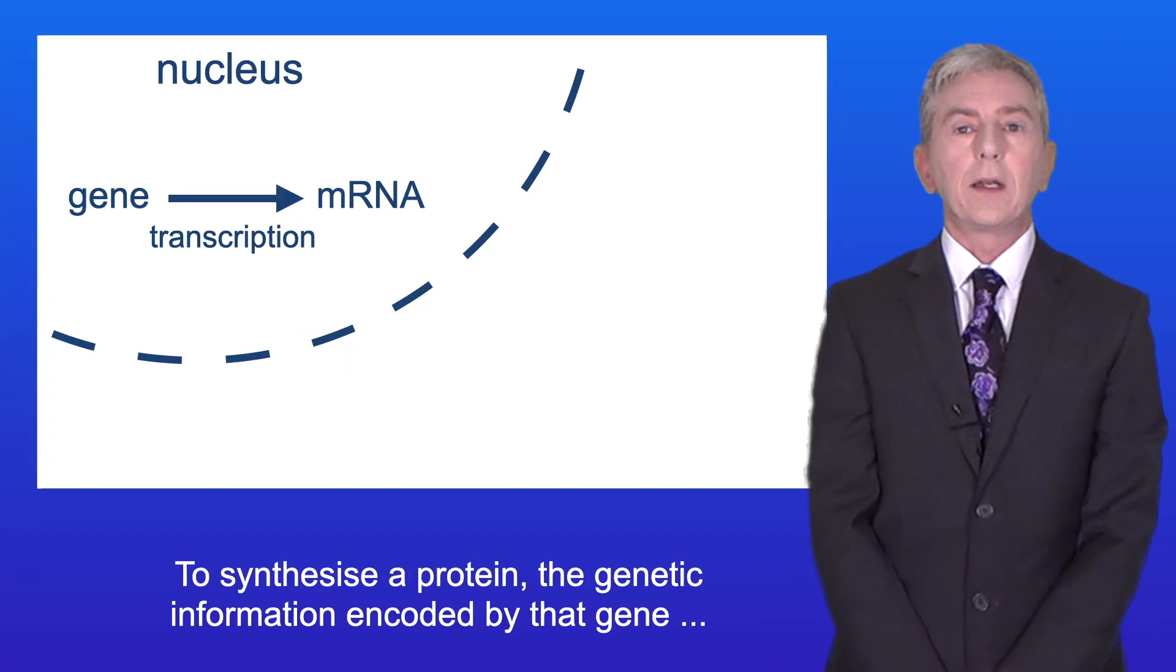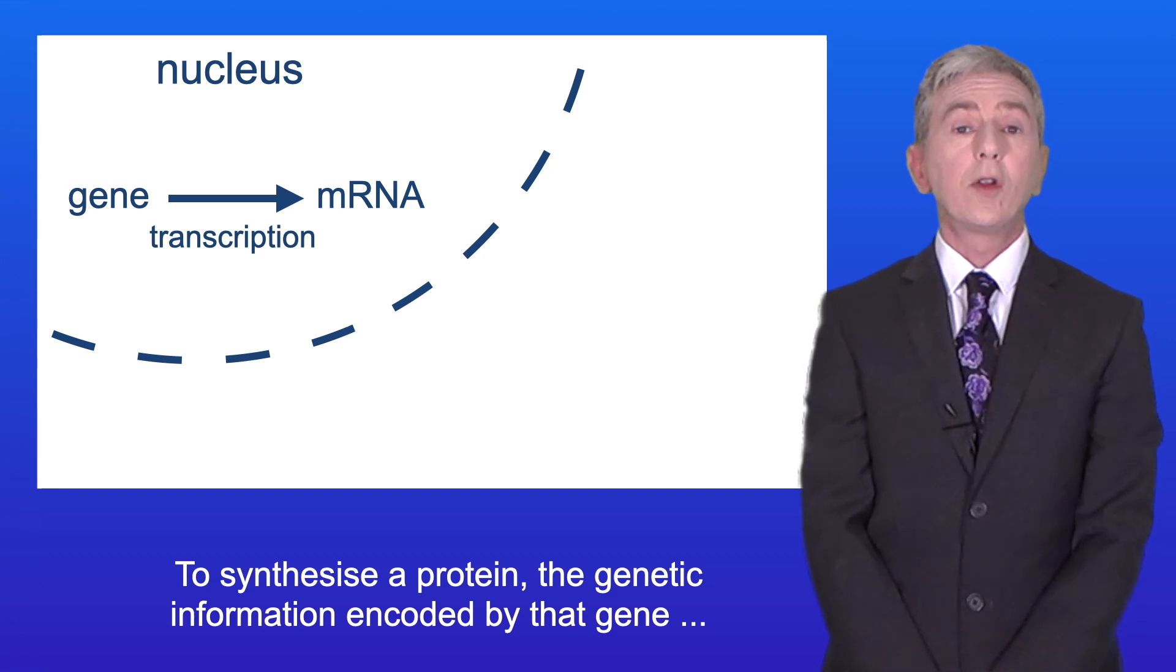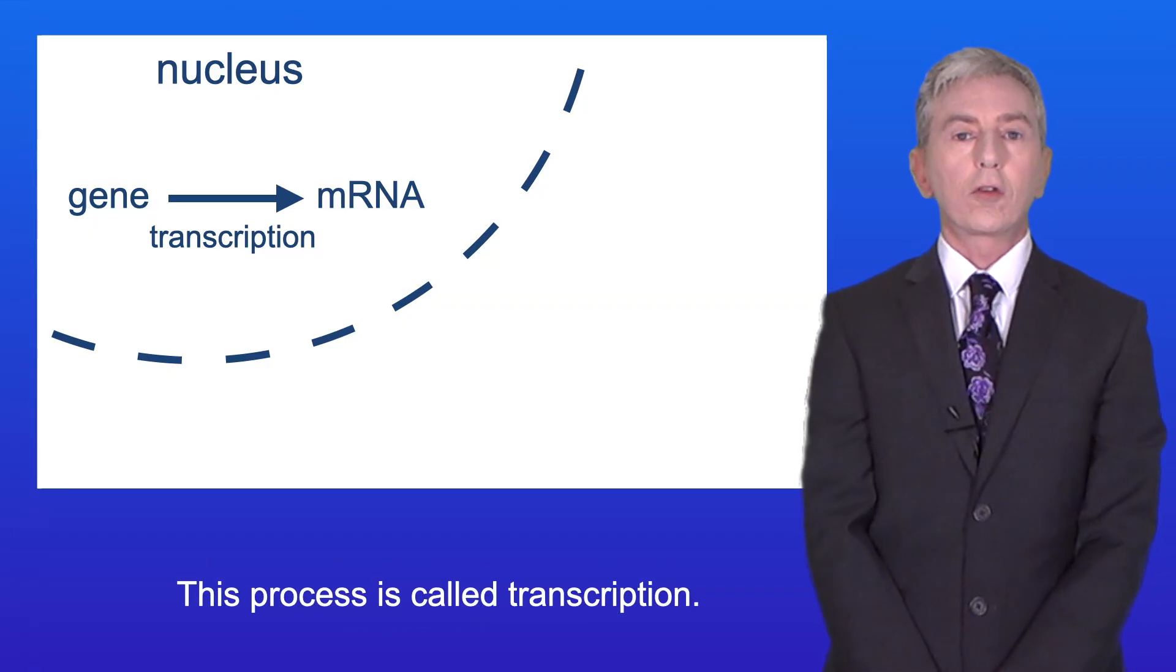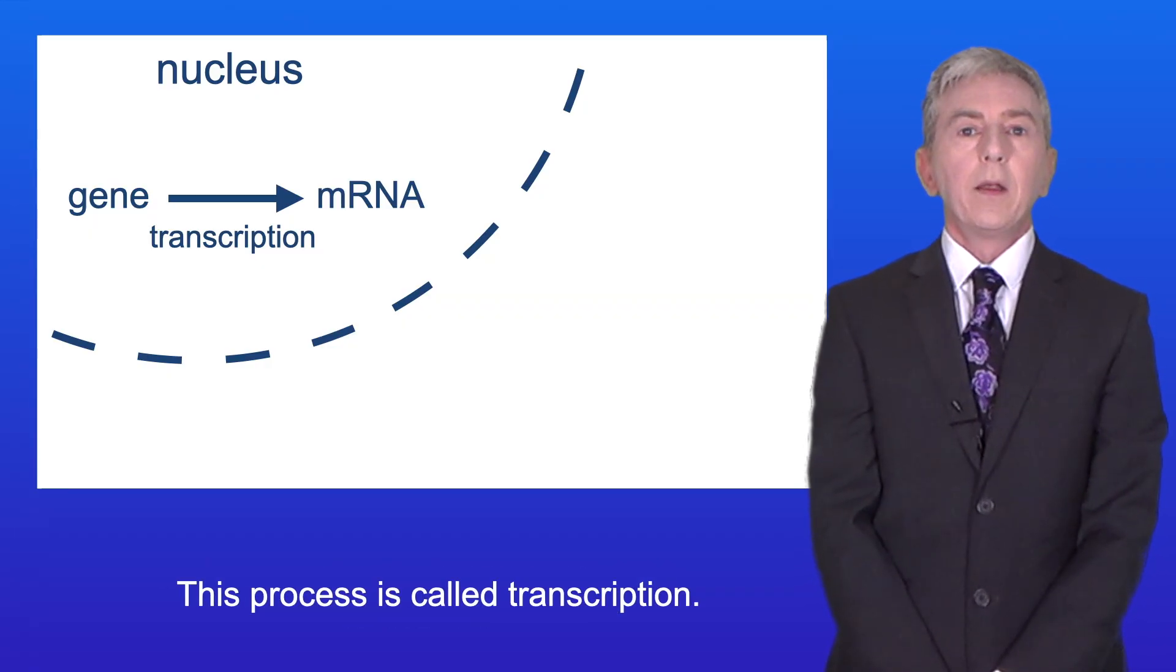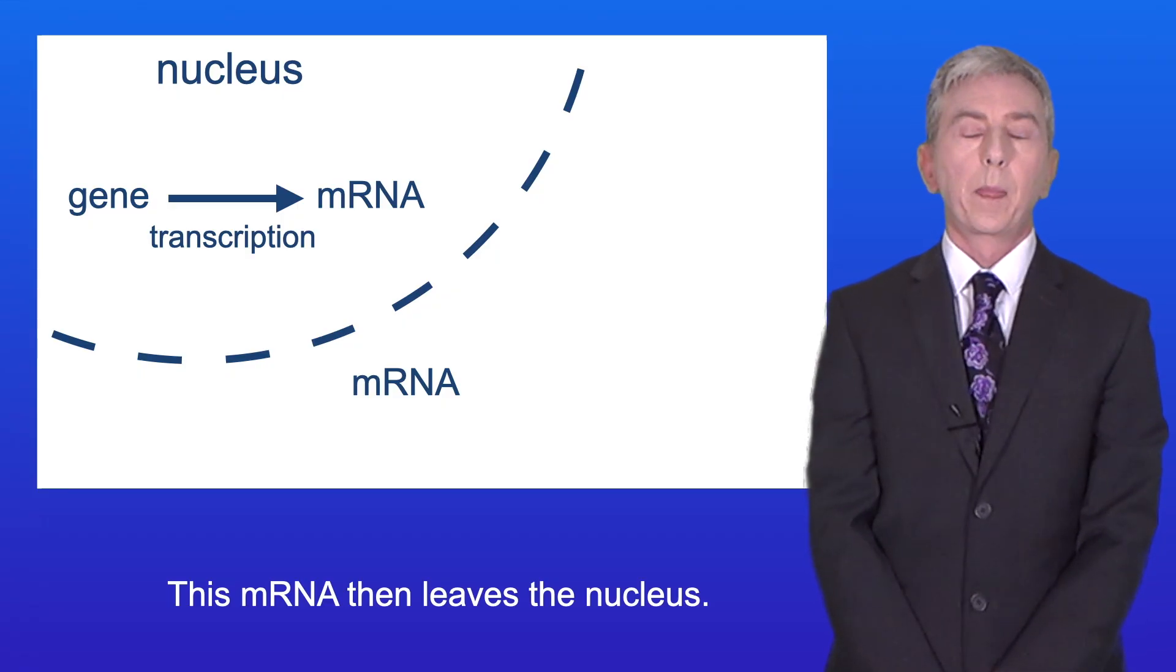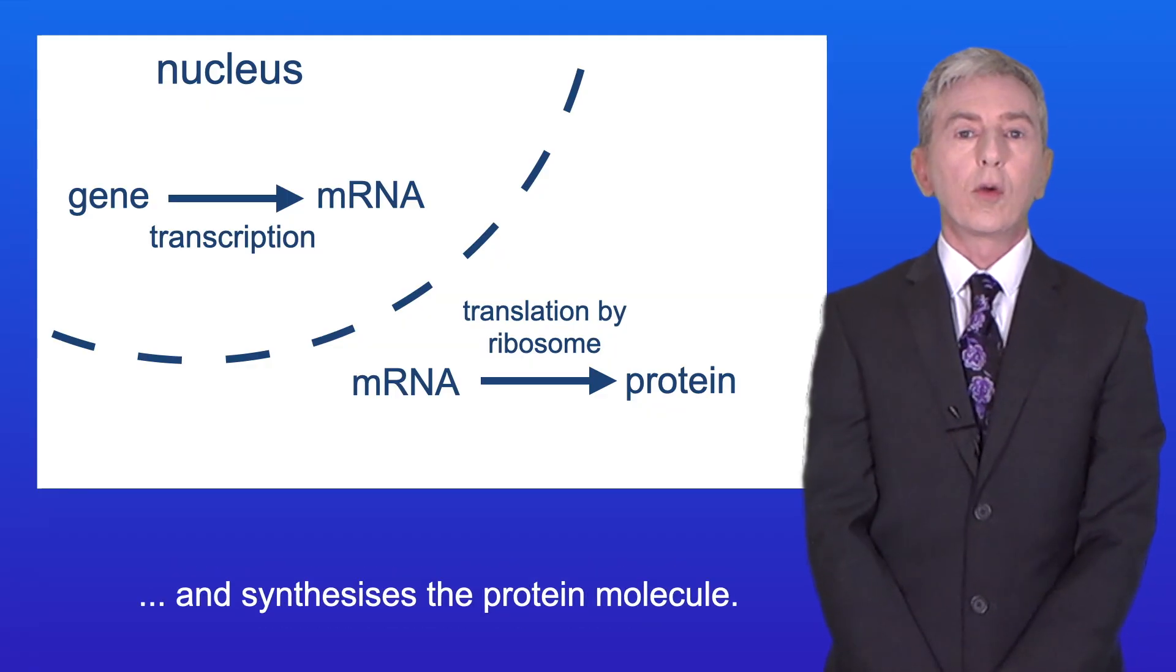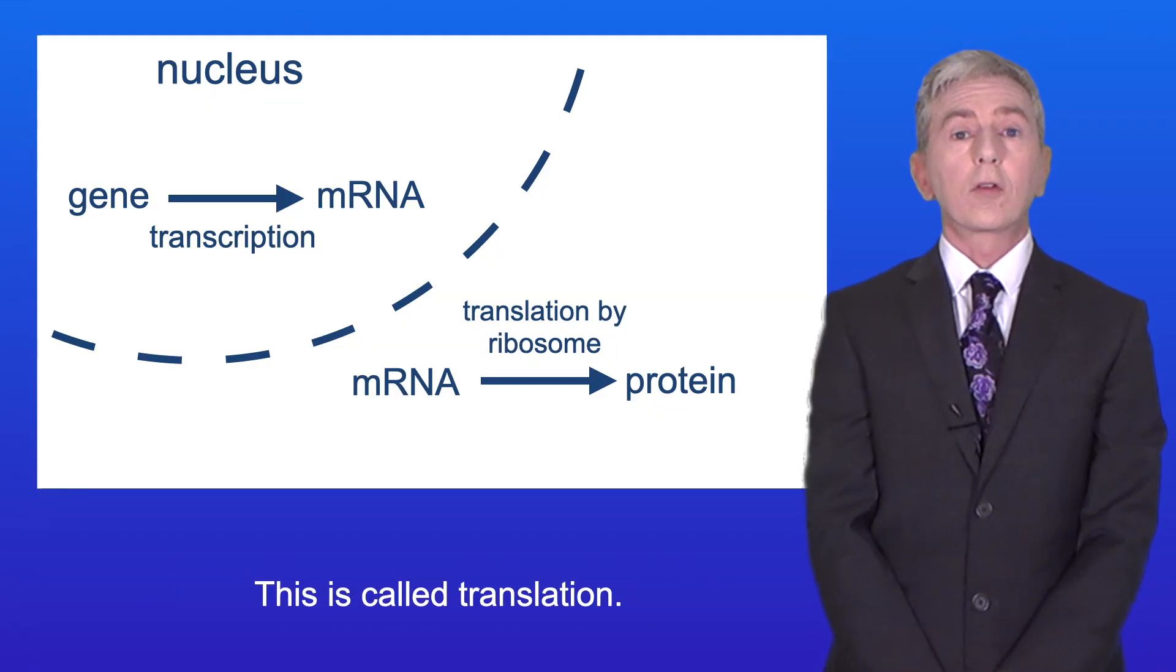To synthesize a protein, the genetic information encoded by that gene is converted to messenger RNA or mRNA. This process is called transcription. This mRNA then leaves the nucleus. A ribosome reads the information contained in the mRNA and synthesizes the protein molecule, and this is called translation.